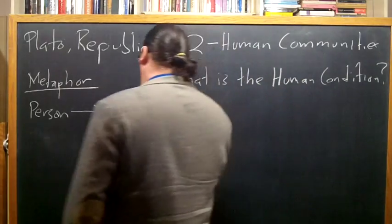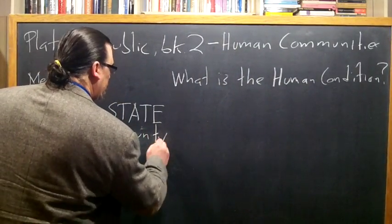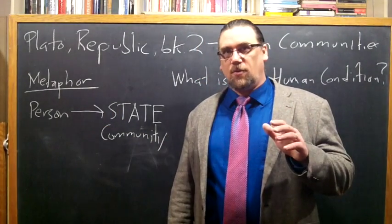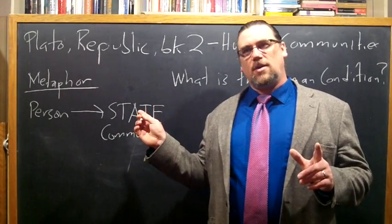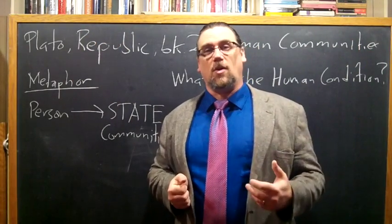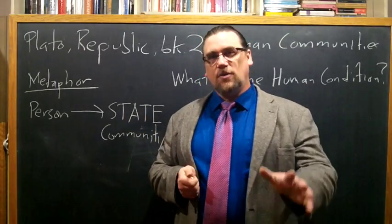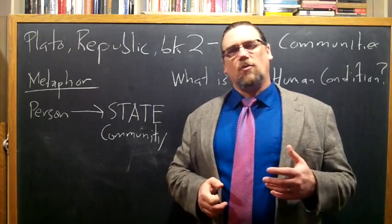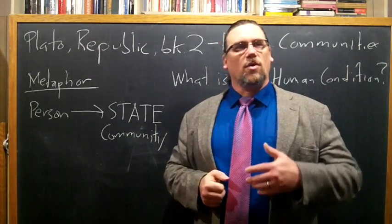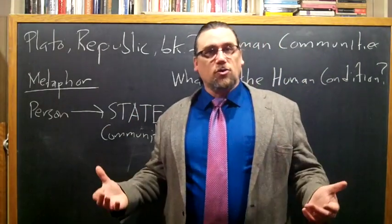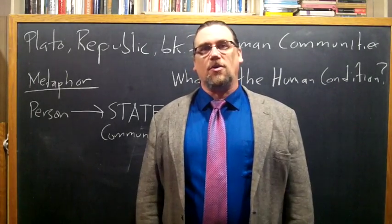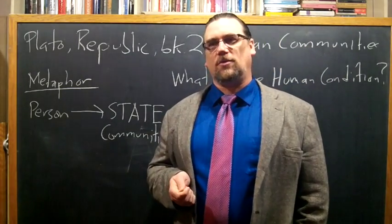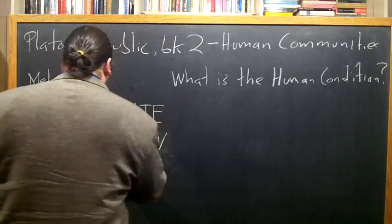Going from a single person to a state or a community is a lot easier because the state is larger, you can see what's going on. We may not be able to see what justice is yet in an individual person, although we're going to see what it is very quickly in Book 4, but we can find a little bit larger scale and thus more visible way of looking at justice in terms of the community or an institution.